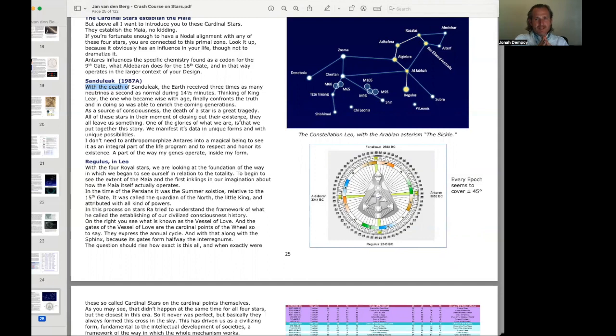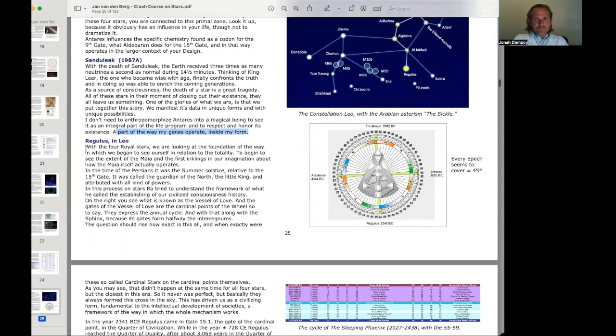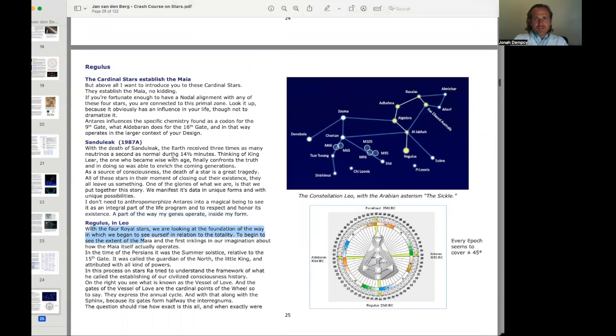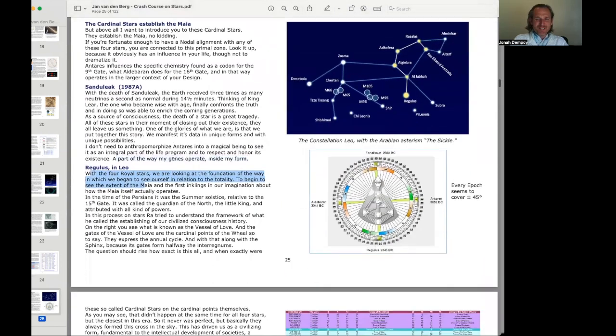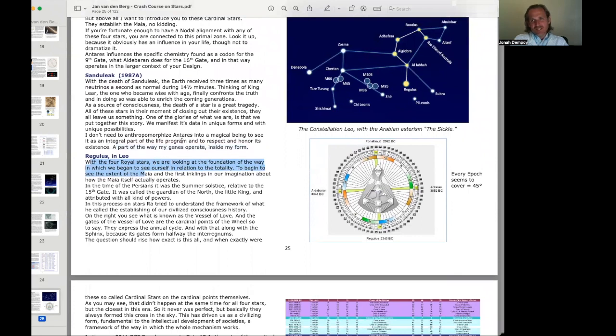He doesn't need to anthropomorphize Antares into a magical being to see it as an integral part of the life program and to respect and honor its existence. It's a part of the way his genes operate inside his form. With the four royal stars, we are looking at the foundation of the way in which we began to see ourselves in relation to the totality, to begin to see the extent of the Maya, and the first inklings in our imagination about how the Maya itself actually operates.